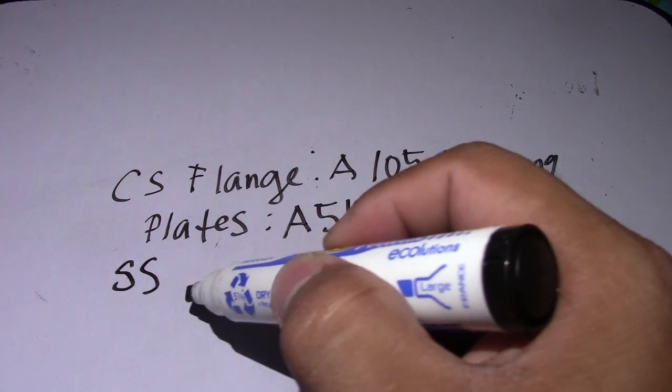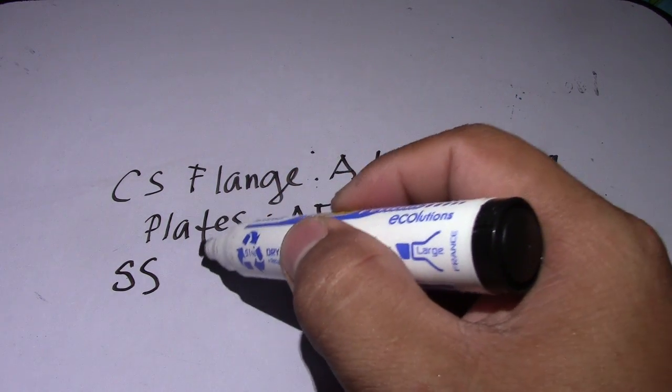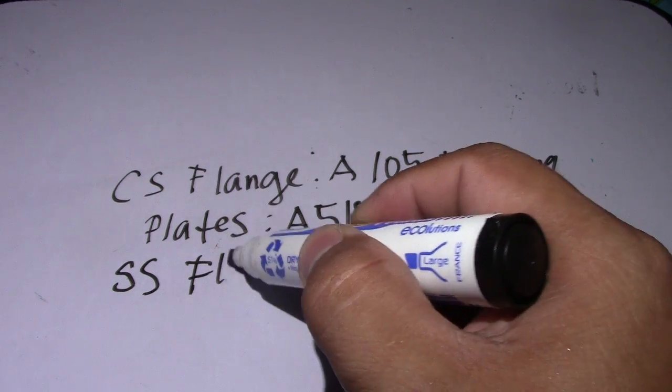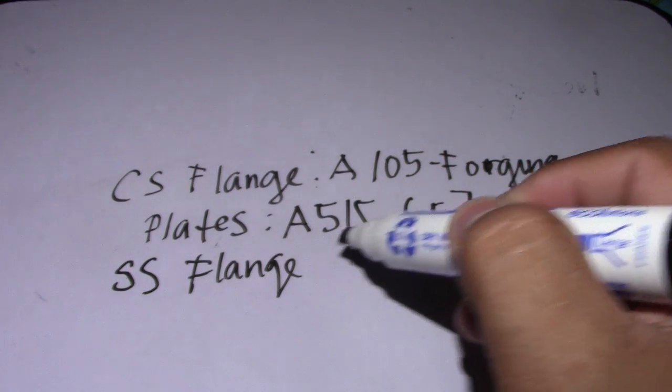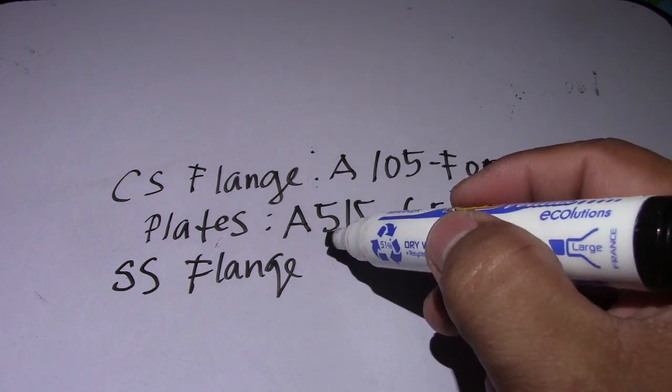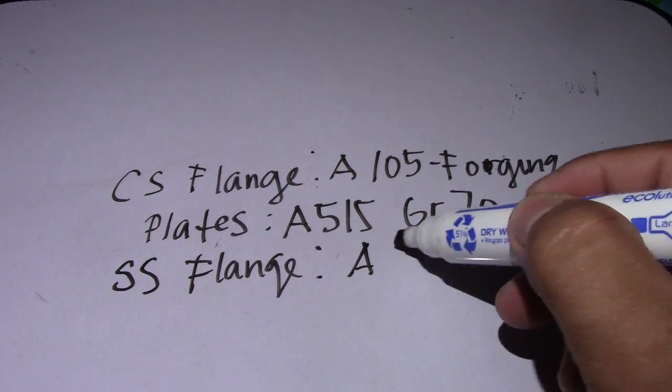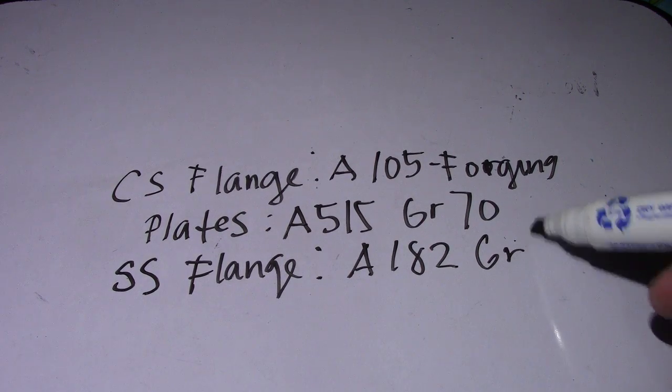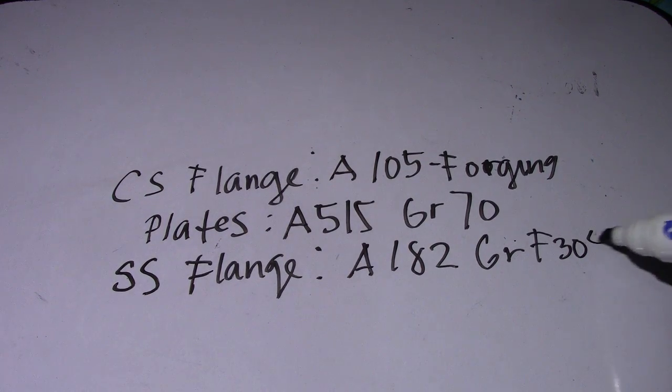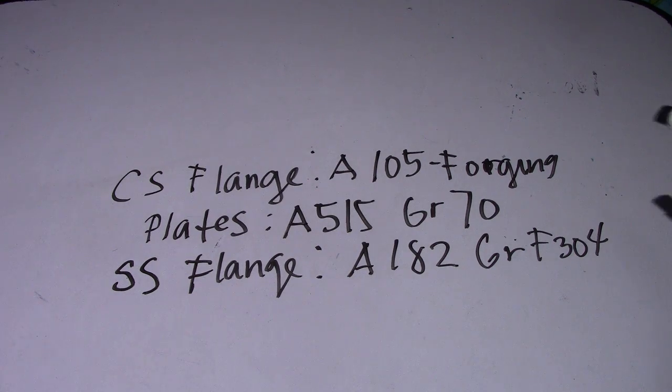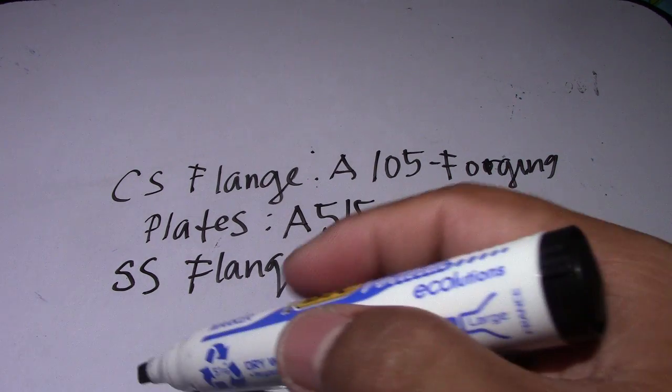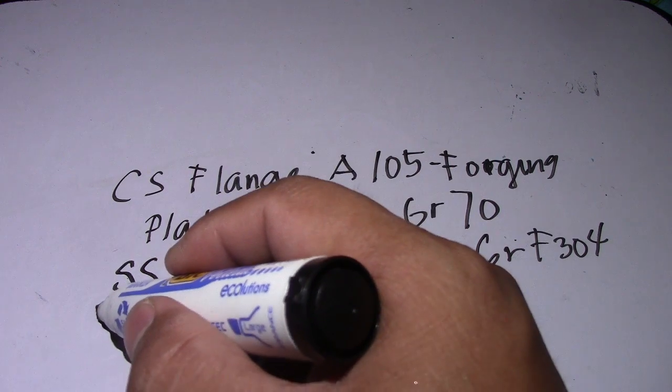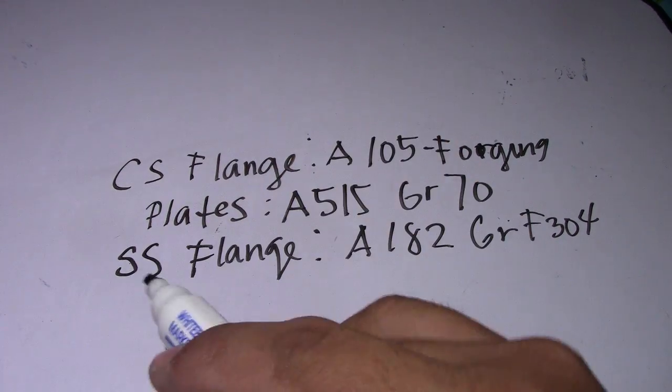SS is stainless steel. SS flanges - we have A182 Grade F304. So LTCS - what is LTCS?